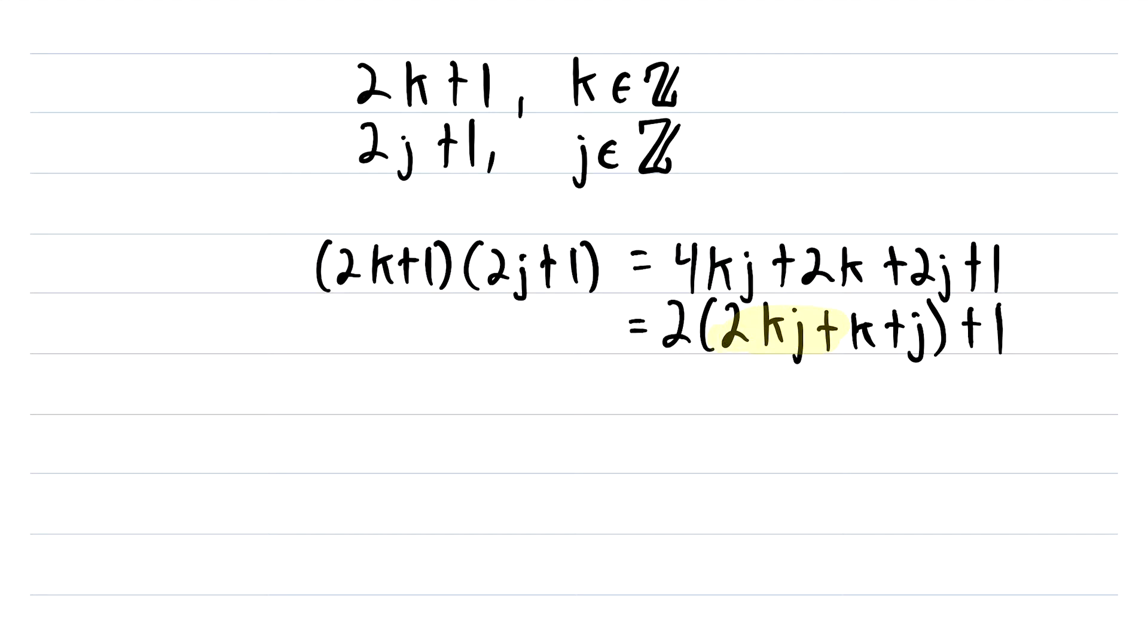Notice that this here, 2kj plus k plus j, is an integer by closure of addition and multiplication over the integers. That just tells us that if we add and multiply a bunch of integers together, we'll get another integer.